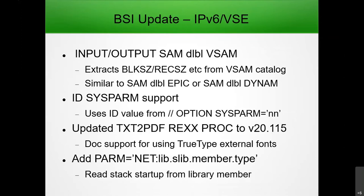We support I/O commands for SAM files where you can specify a SAM file as an EPIC or DYNAM file, and we go out to the EPIC or DYNAM catalog and extract the file type, whether fixed block or variable block, block size, record size, and so on. We added that support for SAM VSAM as well — to extract record size, block size, etc. from the VSAM catalog. Very useful. We also added ID SYSPARM — a customer wanted to not hard-code the stack ID but put it in JCL, so it now uses the ID value from the OPTION SYSPARM statement.